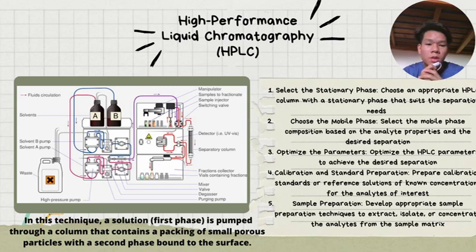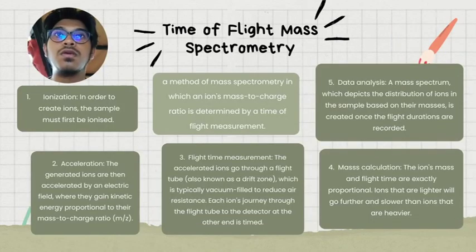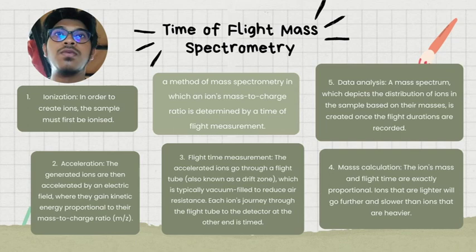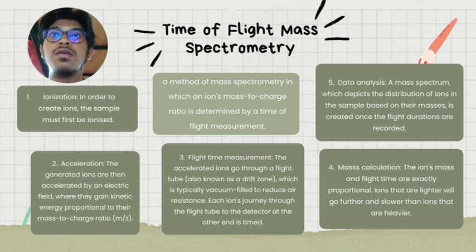Fifth is sample preparation — develop a prepared sample preparation technique to extract or concentrate the analyte from the sample matrix. The third theoretical procedure would be Time-of-Flight Mass Spectrometry, a method of mass spectrometry in which an ion's mass-to-charge ratio is determined by a time-of-flight measurement. The first procedure is ionization — in order to create ions, the sample must first be ionized. Second is acceleration — the generated ions are then accelerated by an electrical field.